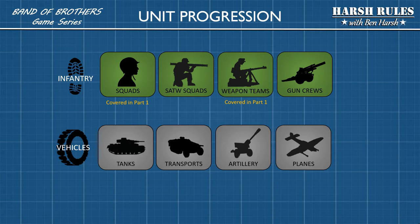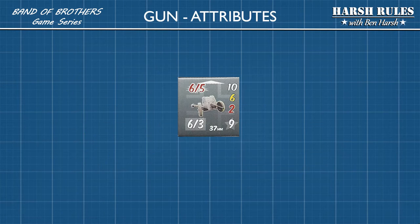I've developed this codification to make it easier to learn the game. First, let's take a look at guns. Guns are large caliber weapons and include anti-tank guns, artillery pieces, and anti-aircraft guns.